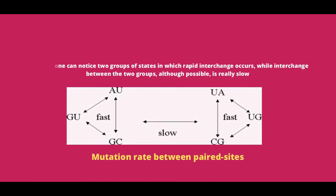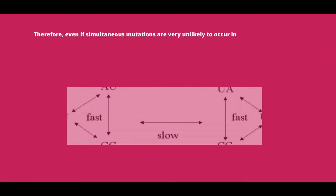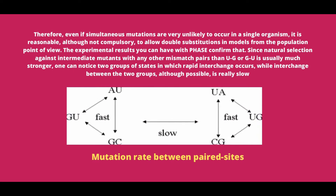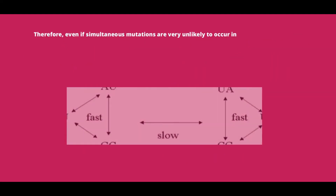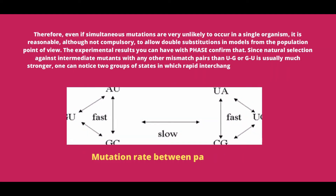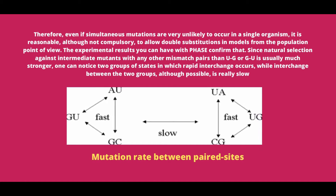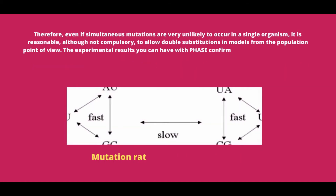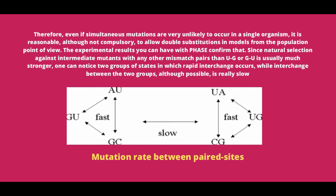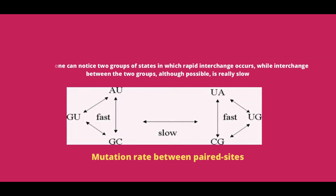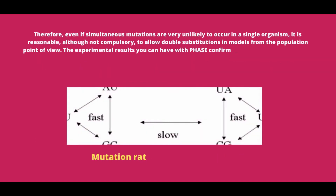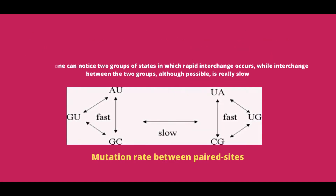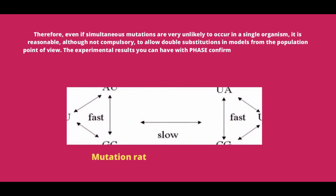The experimental results confirm that, since natural selection against intermediate mutants with any mismatch pairs other than U-G or G-U is usually much stronger, one can notice two groups of states in which rapid interchange occurs, while interchange between the two groups, although possible, is really slow.